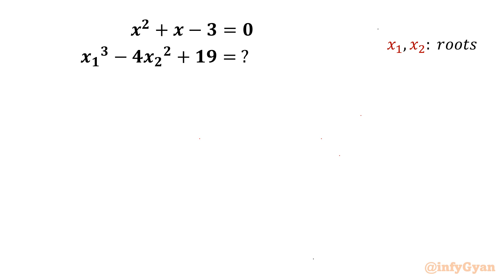Welcome back to Infigyan, my dear friends. In today's video we have one very interesting question from Math Olympiad on quadratic equations. The given equation is x² + x - 3 = 0, whose roots are x1 and x2. We have to evaluate x1³ - 4x2² + 19.